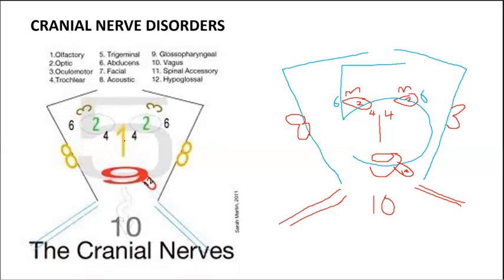Quick review: one is the olfactory nerve; two is the optic nerve; three is the oculomotor nerve; four is the trochlear nerve — inner aspect, helps eyes look down and inward; five is the trigeminal nerve; six is the abducens nerve on the lateral aspect of the eye; seven is the facial nerve — we talked about facial palsy; eight is the acoustic nerve dealing with hearing and balance. Any problem with the eighth cranial nerve creates a fall risk.